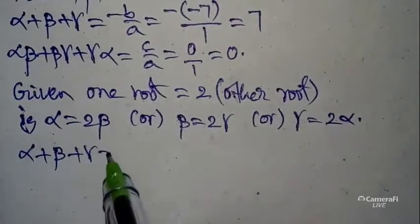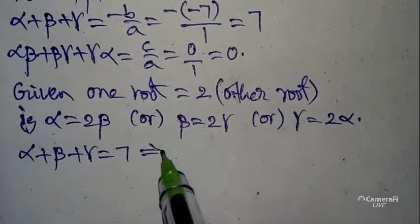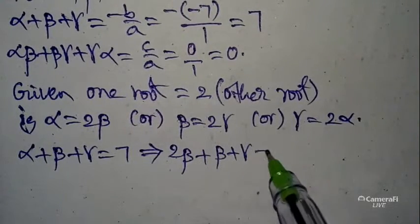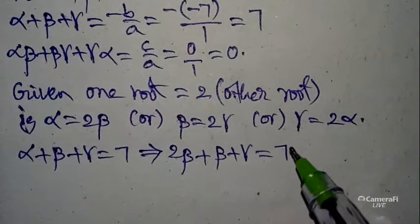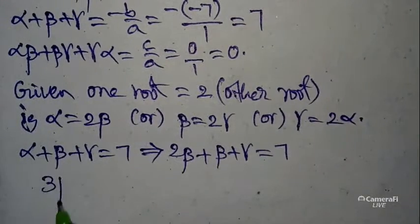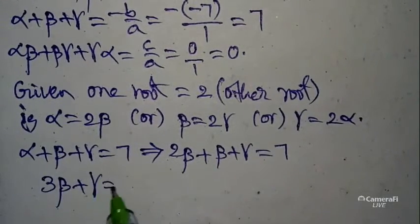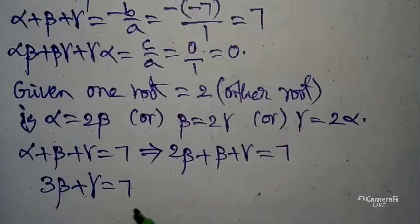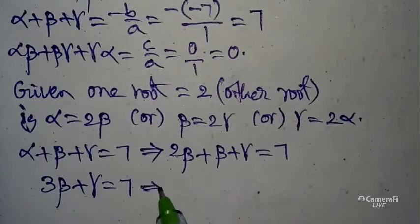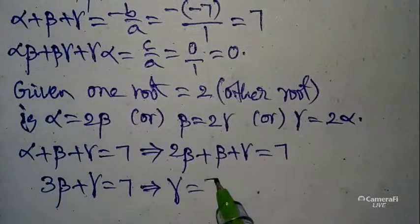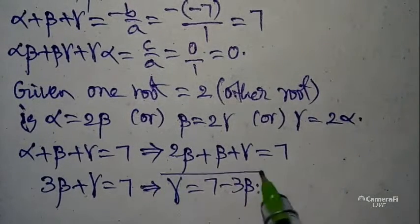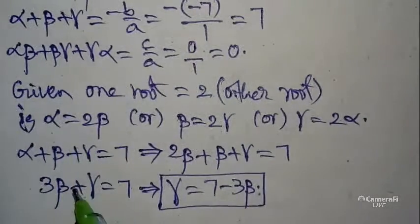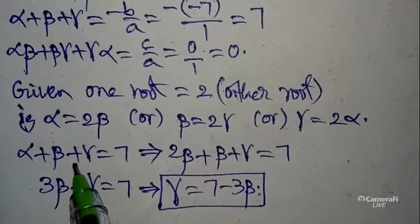Substituting alpha = 2*beta into alpha + beta + gamma = 7: we get 2*beta + beta + gamma = 7, so 3*beta + gamma = 7. Therefore gamma = 7 - 3*beta. Keep this in a box for later use.